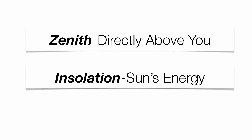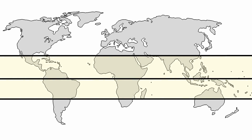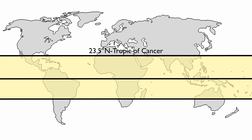A couple of terms to know: the zenith is the point directly above the observer, and the word insolation essentially means the sun's energy — it stands for incoming solar radiation. The incoming solar radiation hits predominantly in the tropics, extending from 23.5 degrees north to 23.5 degrees south, incorporating the equator as well. That's where the sun is going to be at the zenith throughout the entire year. Every latitude between the Tropic of Cancer and the Tropic of Capricorn will have the sun at the zenith at some point. We focus on the first day of summer, winter, spring, and fall — that's where these key latitudes come into play.